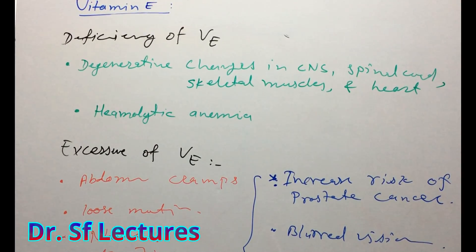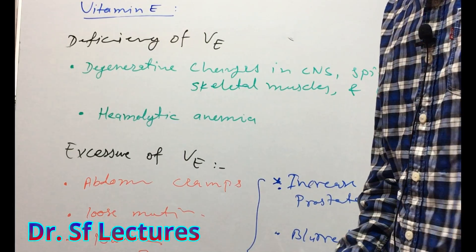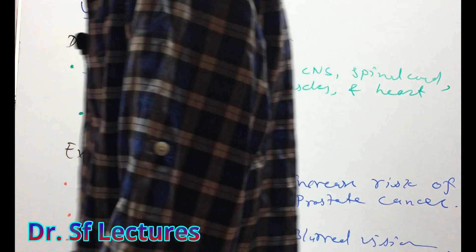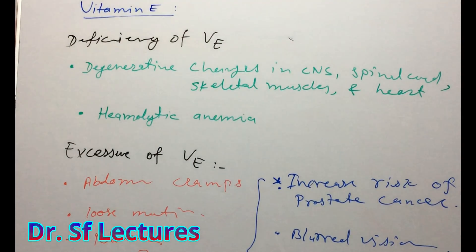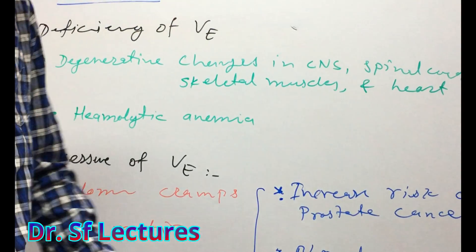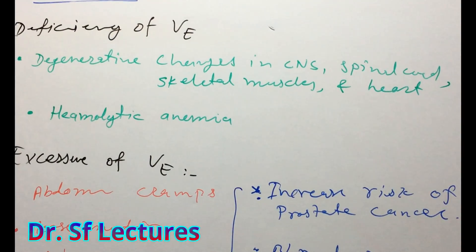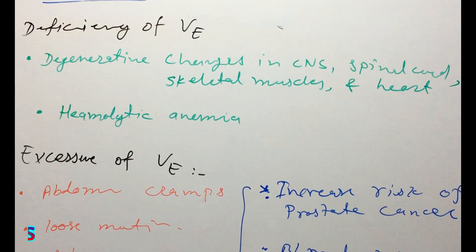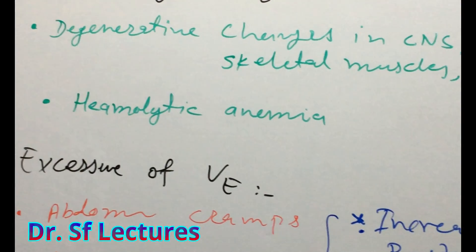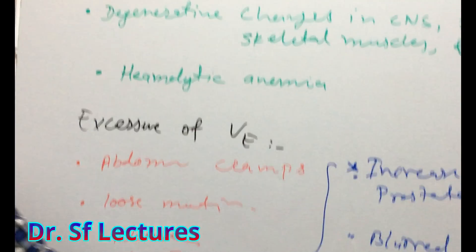The deficiency of Vitamin E: as we know, Vitamin E supplies oxygen to the blood. Deficiency can cause degenerative changes in the CNS — mainly the spinal cord — as well as in skeletal muscle and the heart, because oxygen will be reduced in the blood. Hemolytic anemia is also a consequence of Vitamin E deficiency.